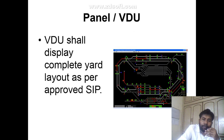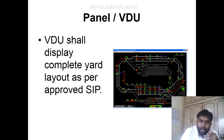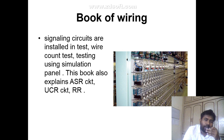Next is panel and VDU. The video display shall show the complete yard layout as per the approved SIP. Panel types include PI, RRI and video EI virtual display units. Next is the book of wiring. In signaling, circuits are installed and tested using wire count testing and simulation panels. This book explains different types of circuits such as JSR circuit, UCK circuit and other circuits indicated in the book of wiring.